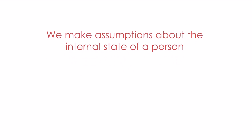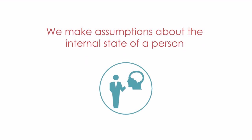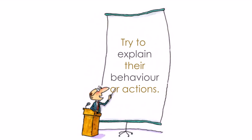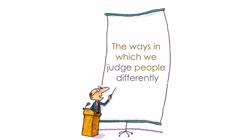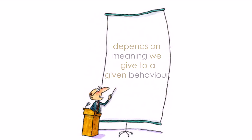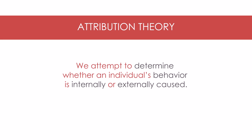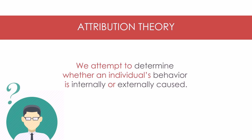We make assumptions about the internal state of a person and we try to explain their behavior. Attribution theory tries to explain the ways in which we judge people differently, which depends on the meaning we give to a given behavior. According to this theory, we attempt to determine whether an individual's behavior is internally or externally caused.